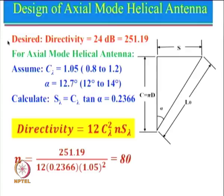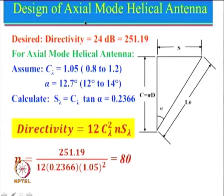We had seen the example where directivity is given as 24 dB and the numeric value is 251.19. I want to mention that this material has been taken from the Kraus book. The only difference is that in the Kraus book they have said this to be gain, whereas I have written it as directivity. The gain of the axial mode helical antenna is efficiency multiplied by directivity, and efficiency is approximately equal to 0.6. So the gain of this antenna will be 251 multiplied by 0.6, which is approximately 150. We had also seen that for axial mode helical antenna, C_lambda should be taken between 0.8 to 1.2.